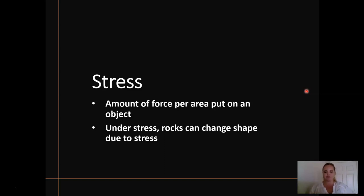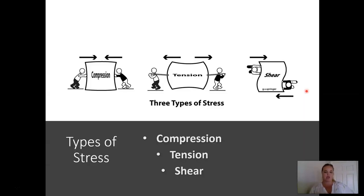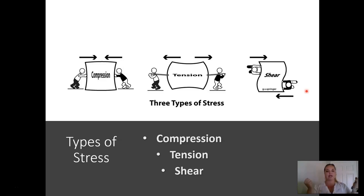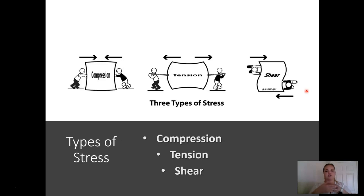Let's talk about the three different types of stress. We have compression, tension, and shear. I alluded to these when we talked about plate tectonics or tectonic boundaries. Compression is the coming together or pushing together. Tension is pulling apart and shear is sliding past. Compression would be like a convergent plate boundary, tension happens at a divergent plate boundary, and shear occurs at a transform plate boundary. We'll talk about how the different types of faults associate with these different types of stresses.